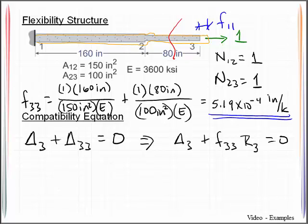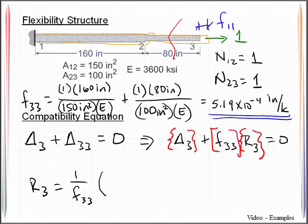Remember that you can have more than one degree in determinacy, and thus more than one redundant. And so it would probably be good for you to look at these as being vectors and matrices, even though in these cases they're all one by one. Recognize that they can be written in matrix form and make it more generic. So now that I've got that I can rewrite this, say R3 is equal to 1 over F33 times negative delta 3.